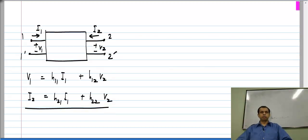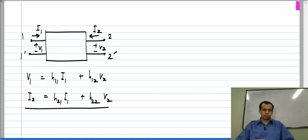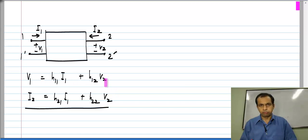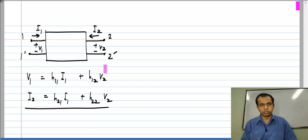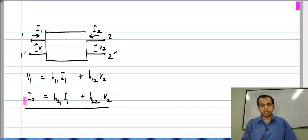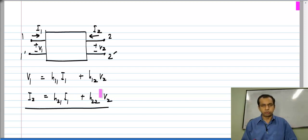Now I will look at the H parameter representation of the two-port. Here again we have two equations. V1 is the sum of two quantities; since the voltage is a sum, we can think of each term as an individual voltage drop appearing in series to form V1. In the second equation, I2 is a sum of two quantities; since these two currents sum up, we can think of them as parallel branch currents which add to give I2.